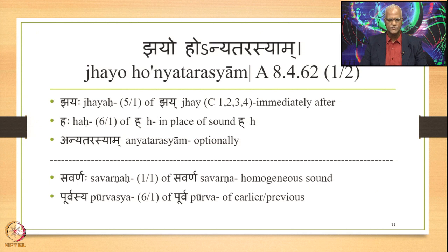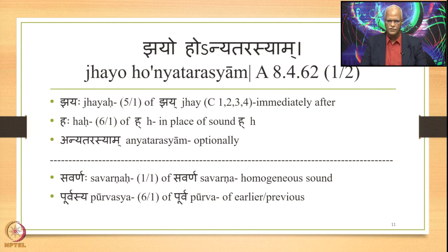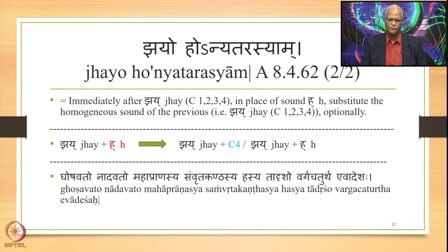Now let us study the next sutra, Jhayohonyatarasyam, which is 8.4.62. This sutra has three padas: Jhayah is the 5th case singular of Jhay — consonants in columns 1, 2, 3, 4 — meaning immediately after Jhay. Haha is the 6th case singular of H, meaning in place of sound H. Anyatarasyam means optionally. The words Savarnaha and Purvasya are continued from the previous sutra.